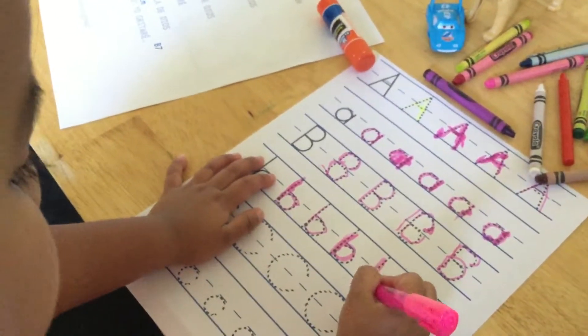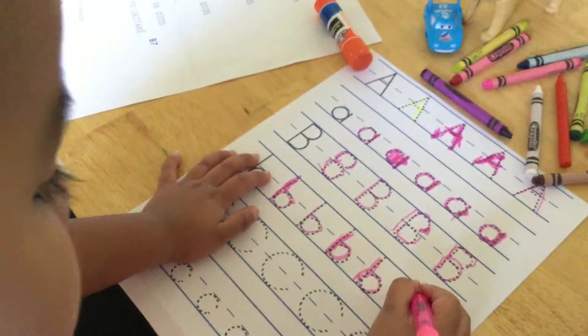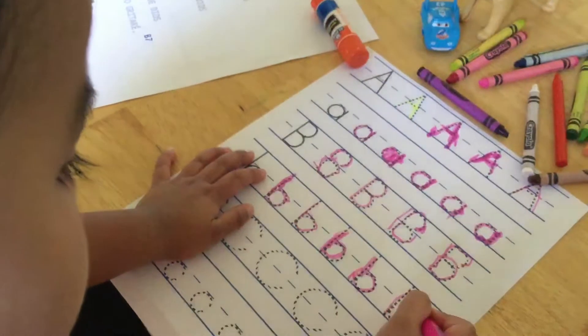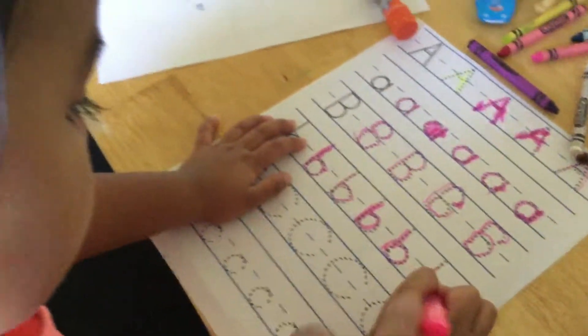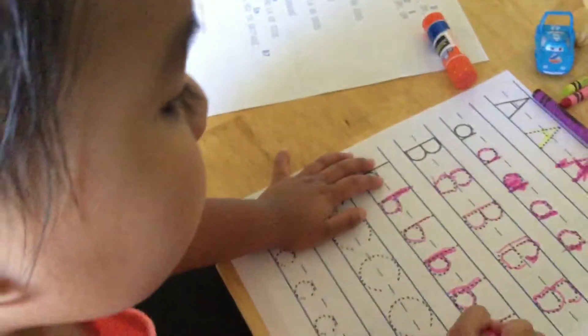And what letter is that? B. Yeah. Is that the big B or the small B? Big B. That's the big B? Yeah. So then what's this one up here? Oh, the big B. That's the big B, yeah. Yeah, yeah.